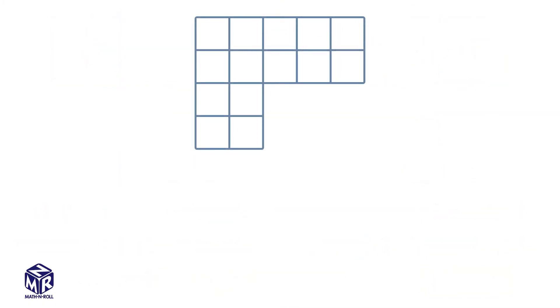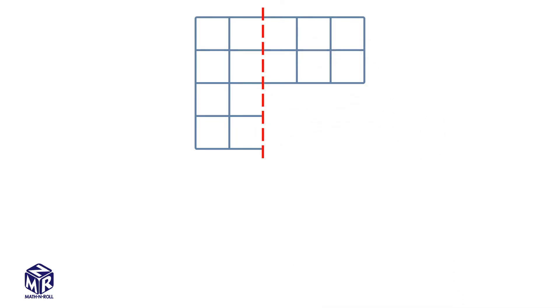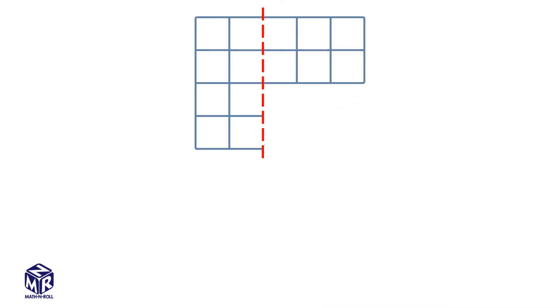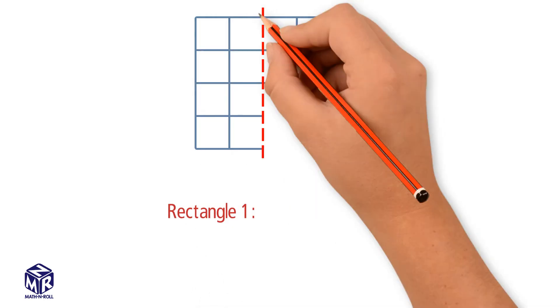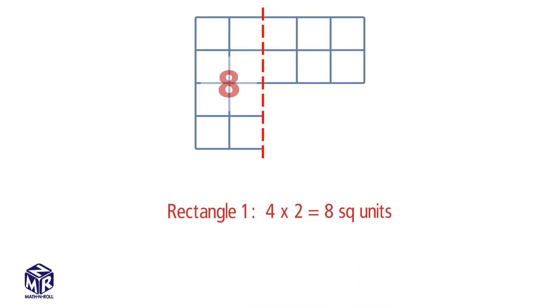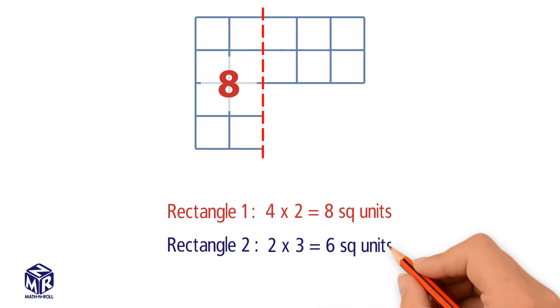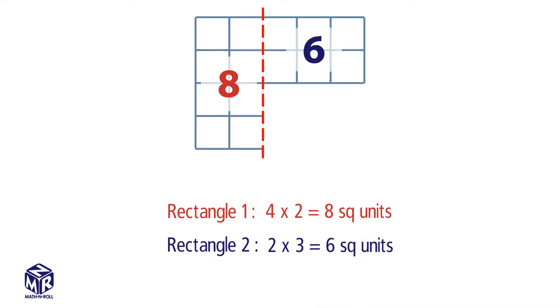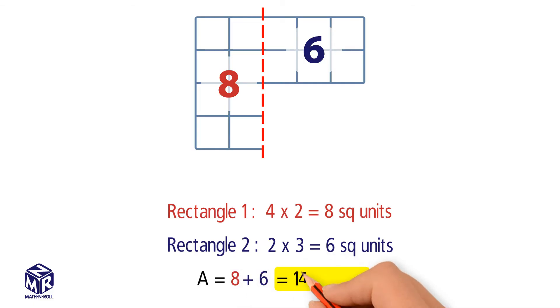Let's do another example. Draw a vertical line to break apart the model. The first rectangle is a 4 by 2 rectangle, so we multiply 4 times 2 to get 8 square units. The second rectangle is a 2 by 3 rectangle, so we multiply 2 times 3 to get 6 square units. To find the area of the figure, we add the areas of the two smaller rectangles: 8 plus 6 equals 14 square units.